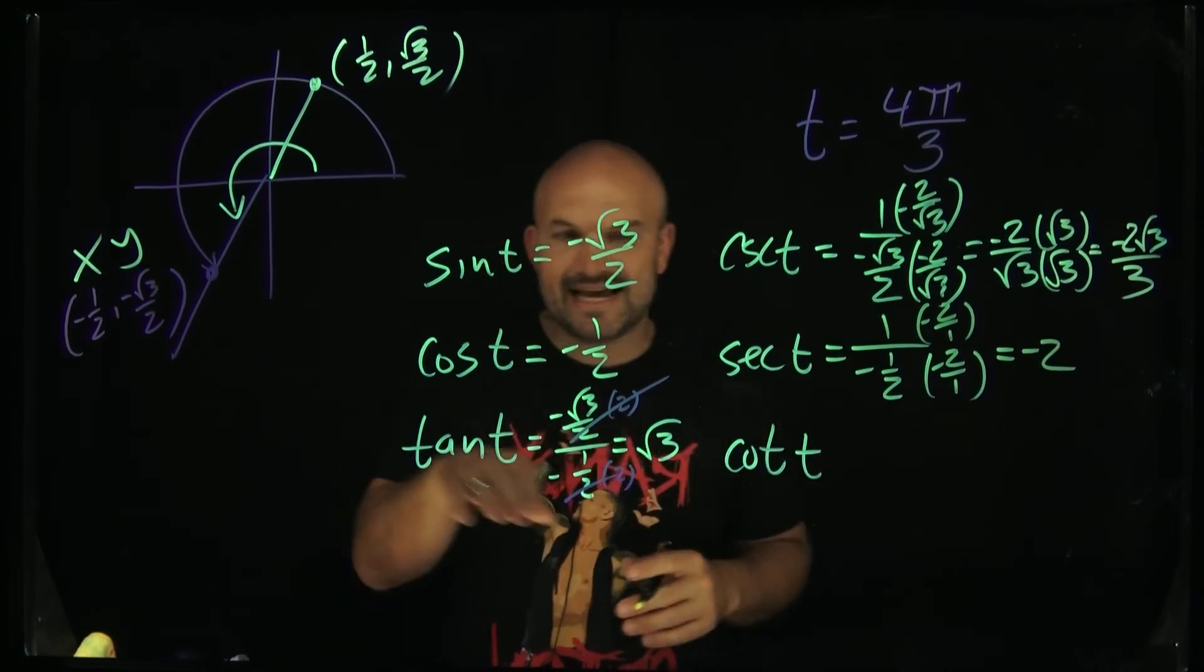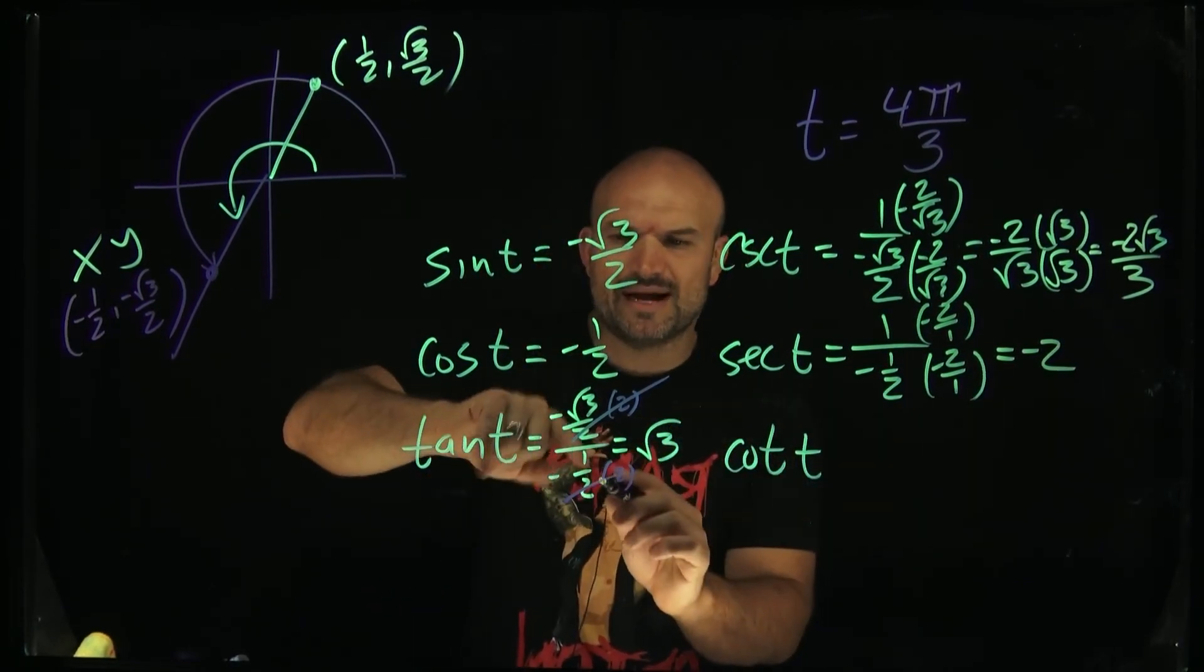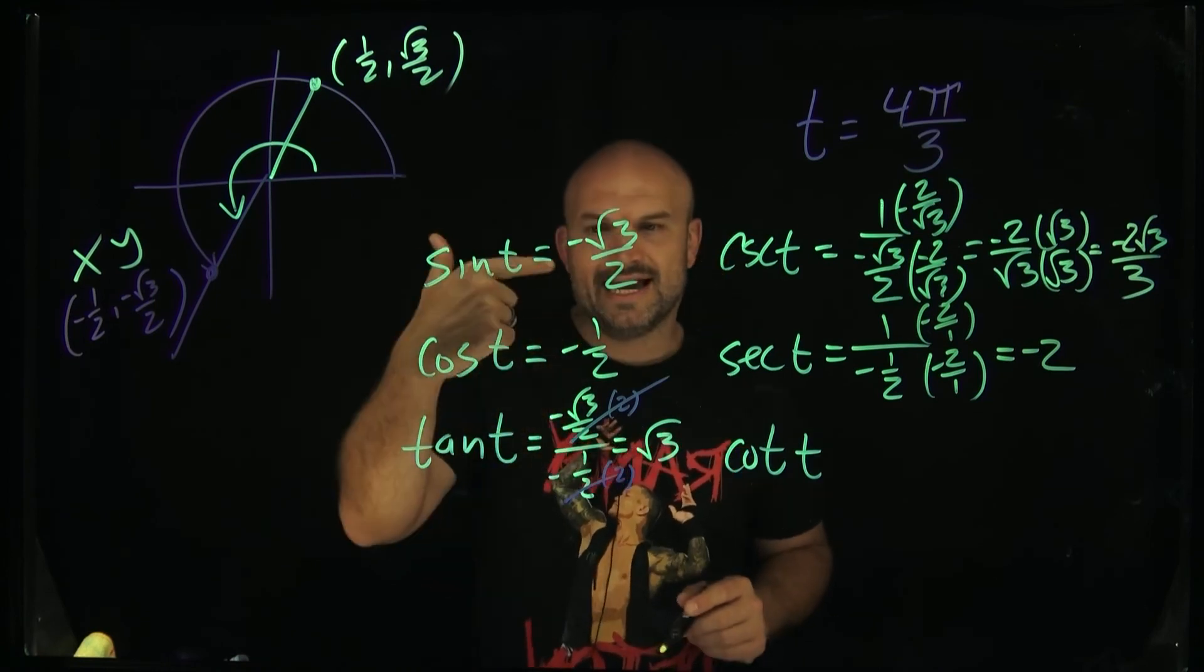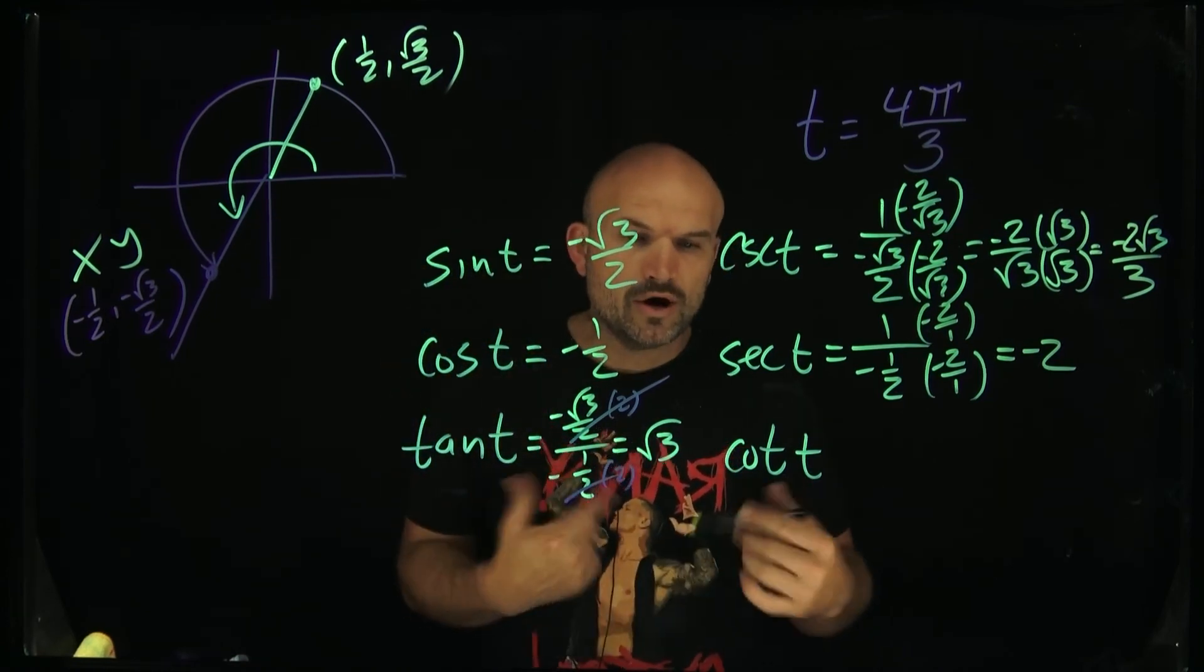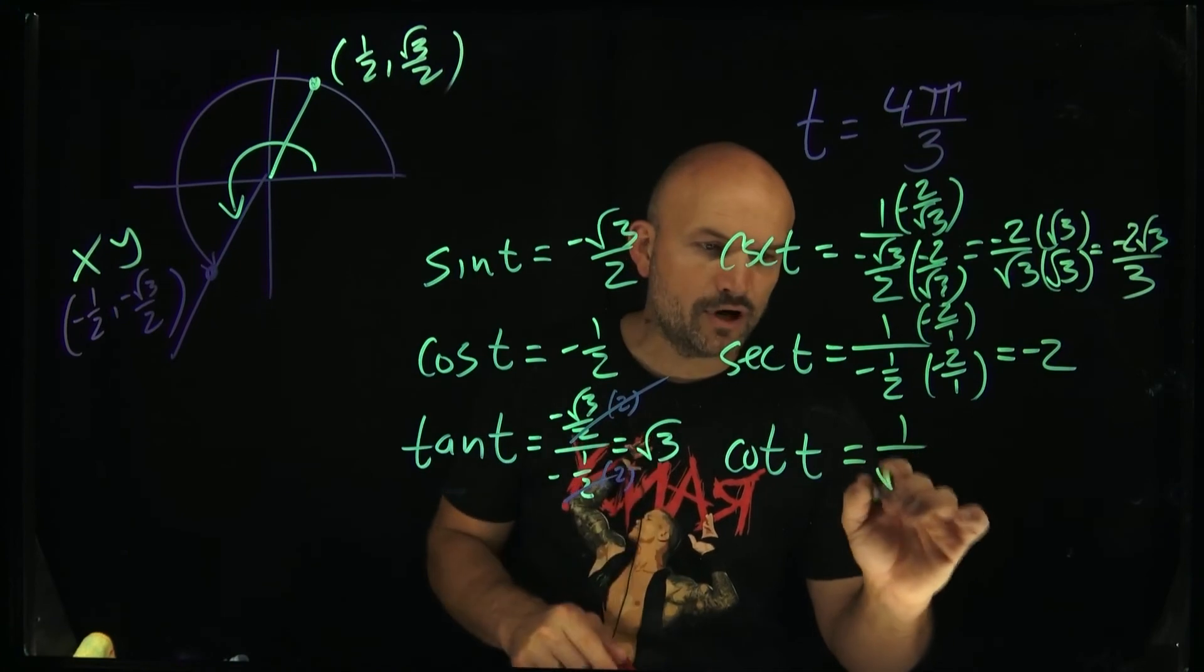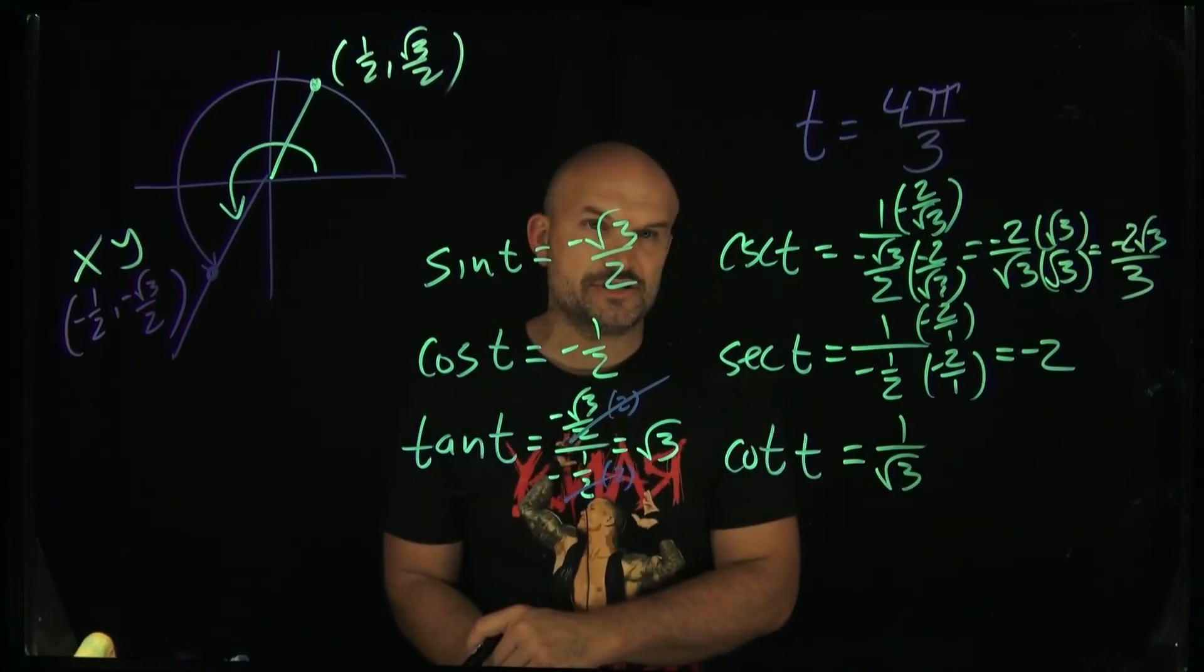Now, the same thing for the tangent. What I don't want you to do is you could rewrite this as a negative 1/2 over a negative square root of 3 over 2, right? Or you could simply just say, well, why don't I just take a 1 and put it over my final answer that I got for cotangent.